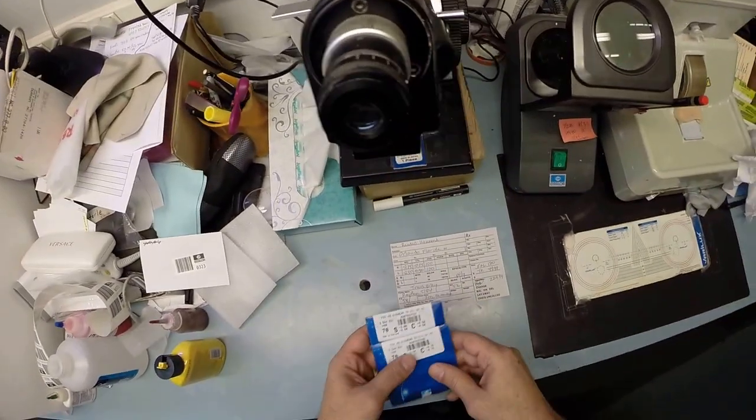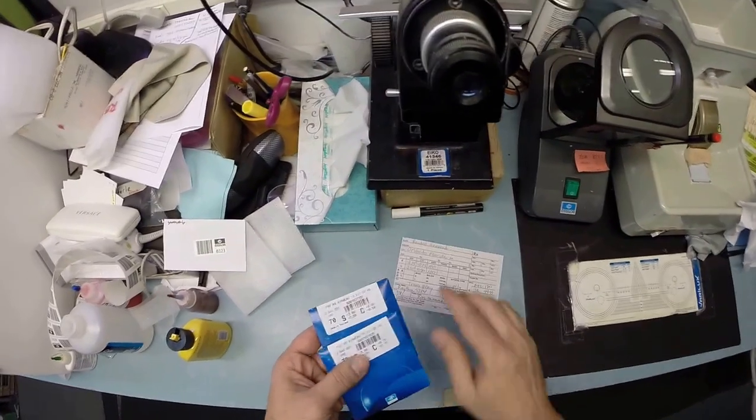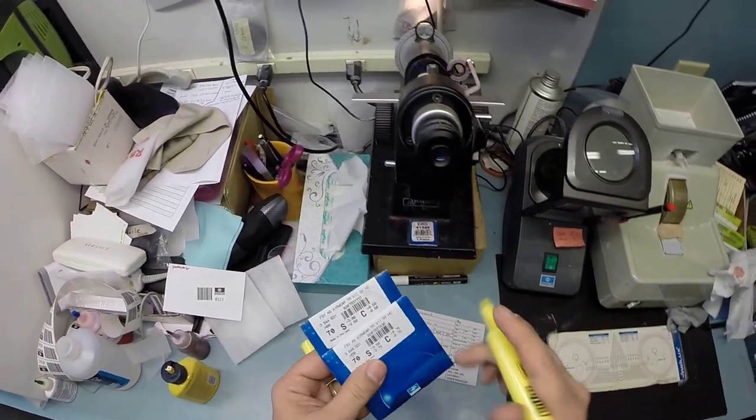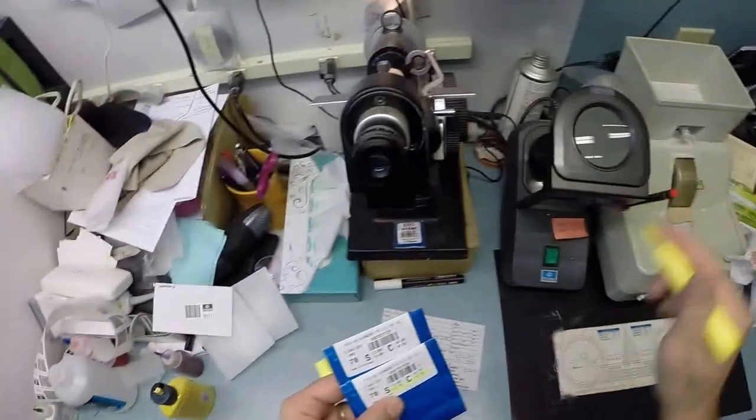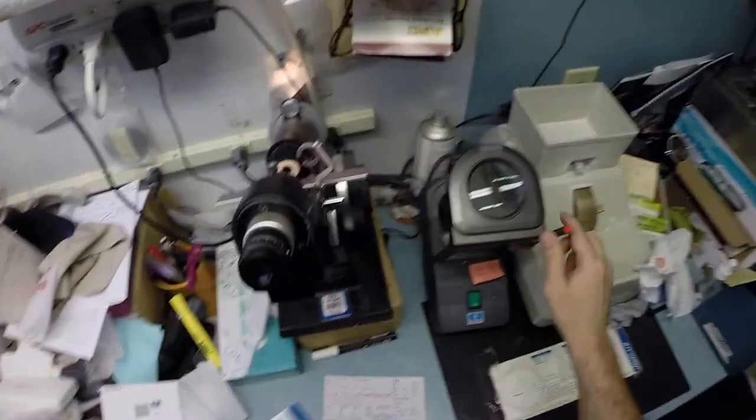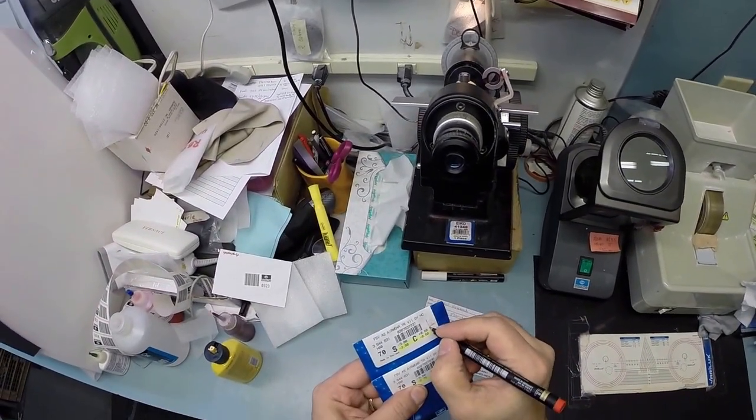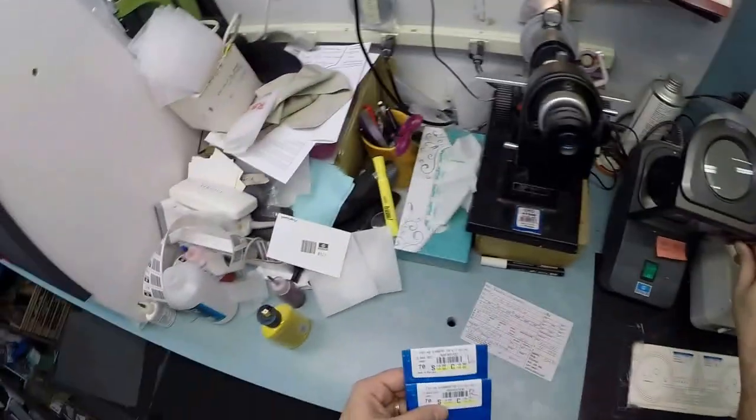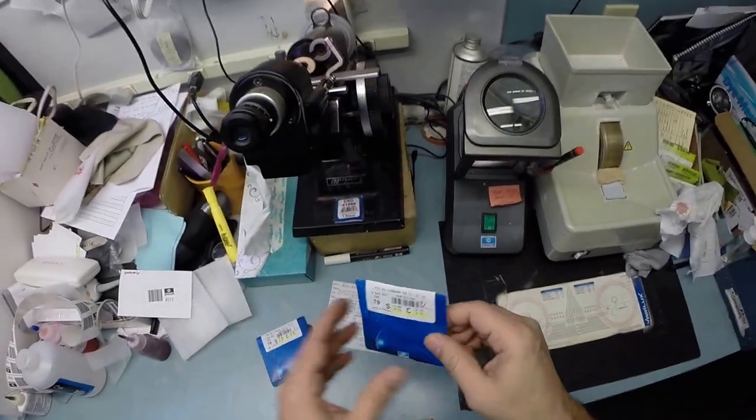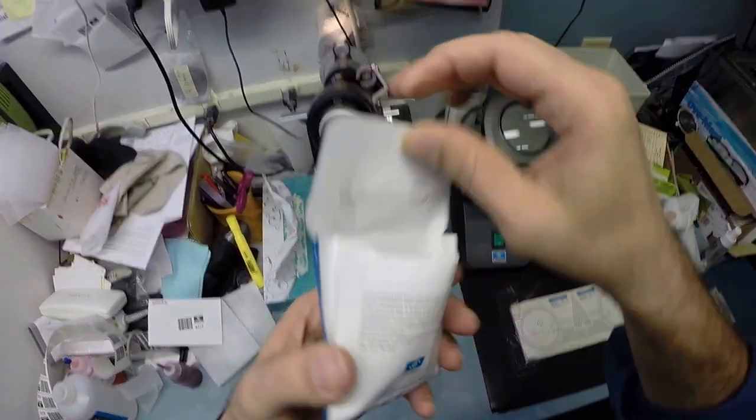Your right eye reads minus 2.75 minus 0.75 at 100. Let me highlight that for you: minus 2.75 minus 0.75. This is your right lens. And minus 2.50 minus 0.50 at 100 is your left. Let me mark this one left.